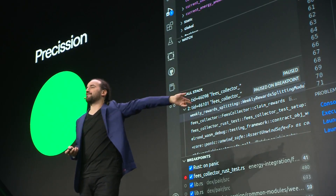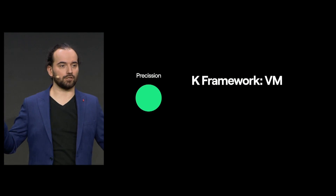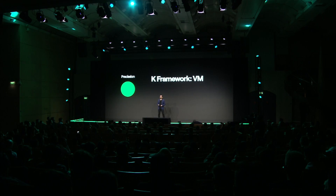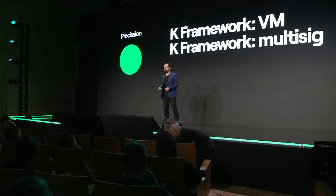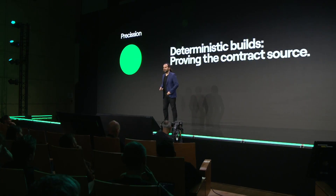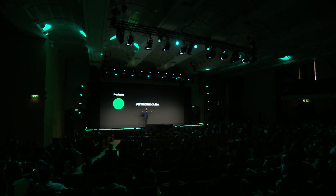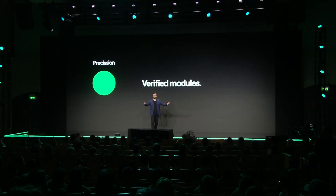We have a very good debugger — programmers' best friend. And even more important than that, the greatest form of precision comes from mathematics. There is work underway to build a K framework model of the VM. At least one of our contracts — the multi-sig — was formally modeled and verified using K framework. We have several components that we've modeled in TLA+ and also verified. We also have deterministic builds, so you always know that the sources for the contract you're using are exactly what you think they are. And if you want to start from verified modules rather than scratch, you can put them together and get going from there.